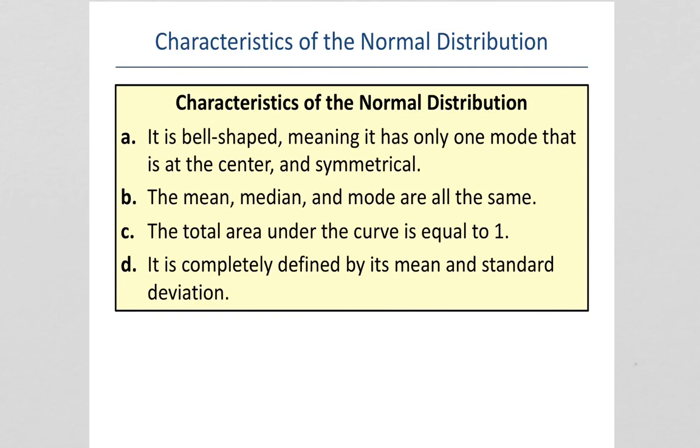A normal distribution is bell-shaped, meaning it has only one mode at the center, and it's symmetrical. The mean, median, and mode are all the same, or in a sample, approximately the same. The total area under the curve is equal to one. One hundred percent of the data falls beneath the curve. It's completely defined by its mean and standard deviation.